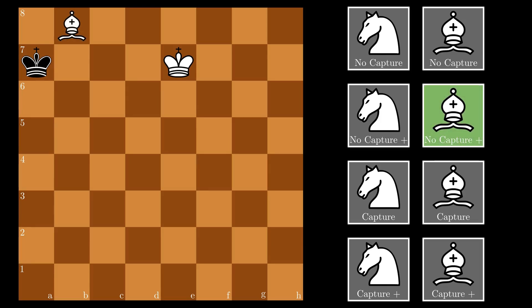Now, the setup is a bit different. To avoid losing, White must capture, but like before, choosing a Bishop doesn't change the outcome.